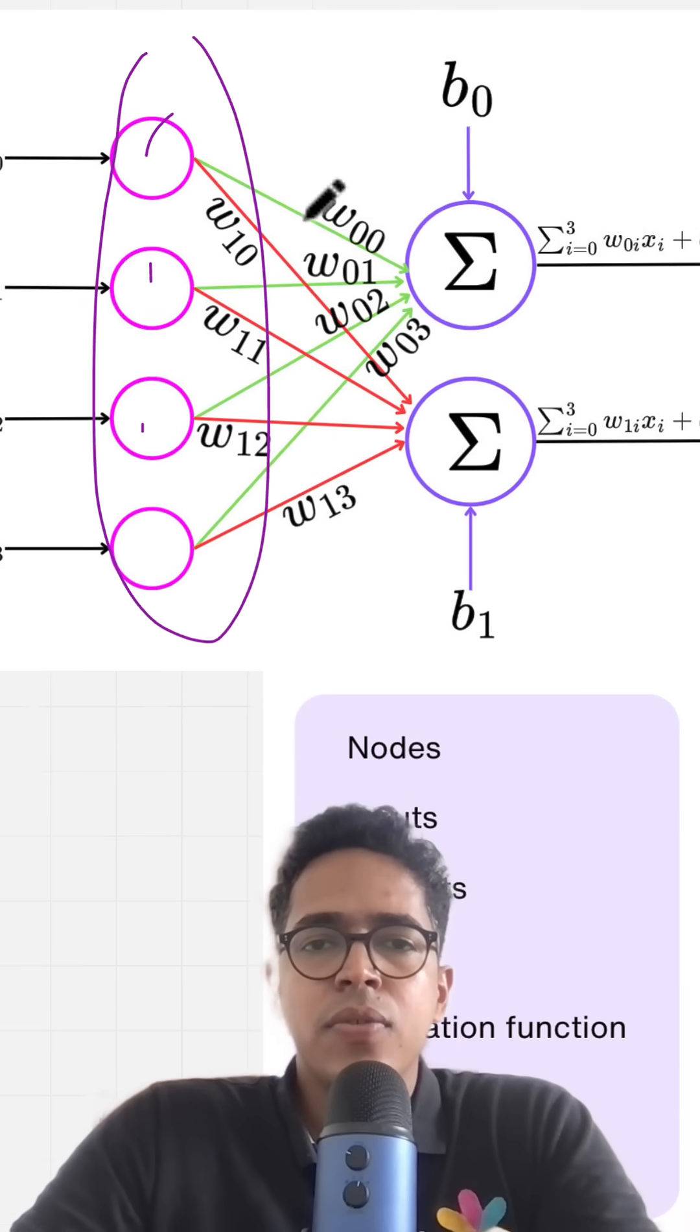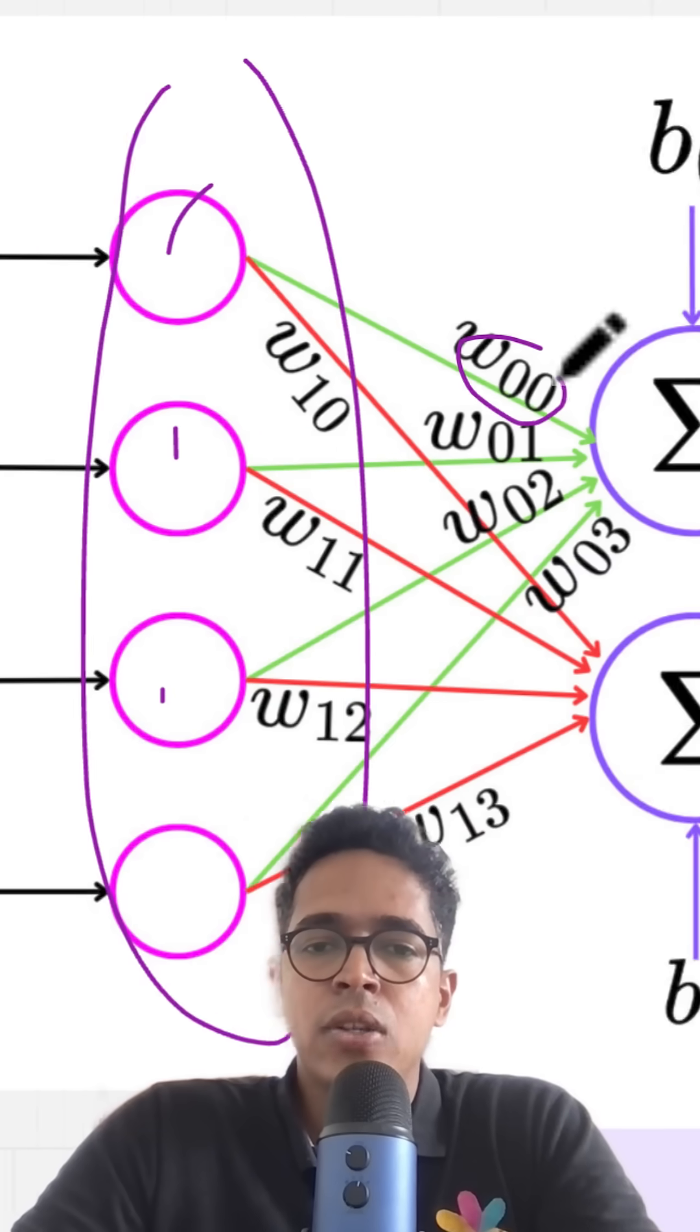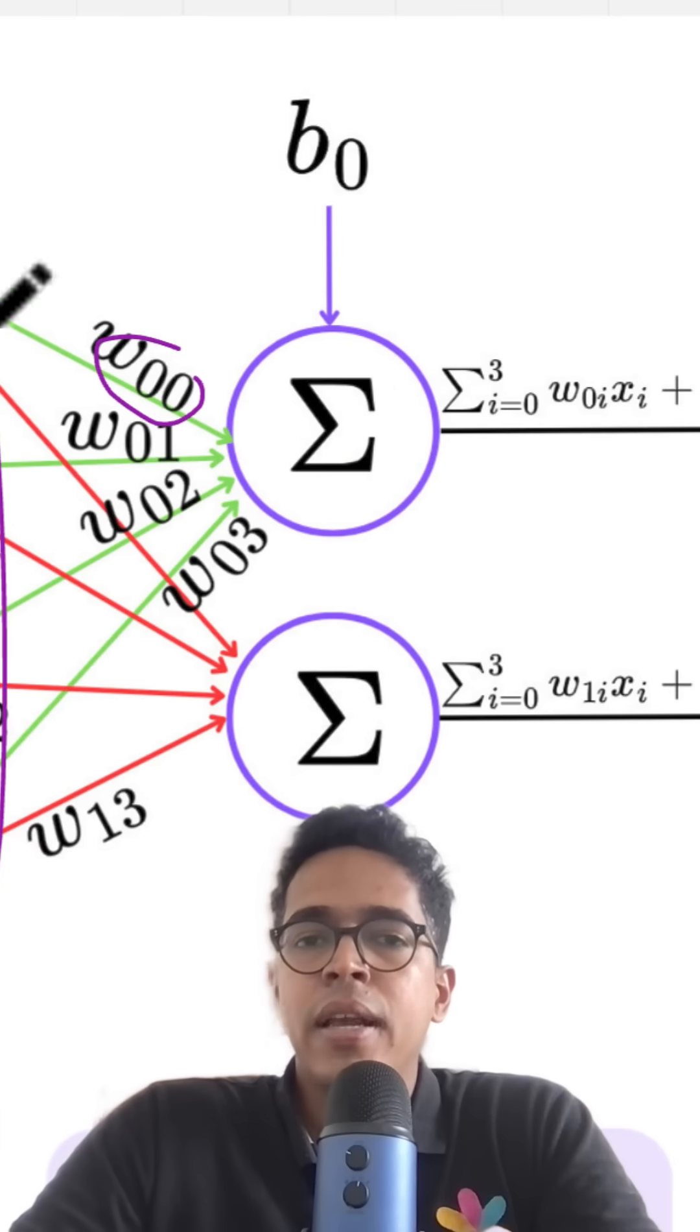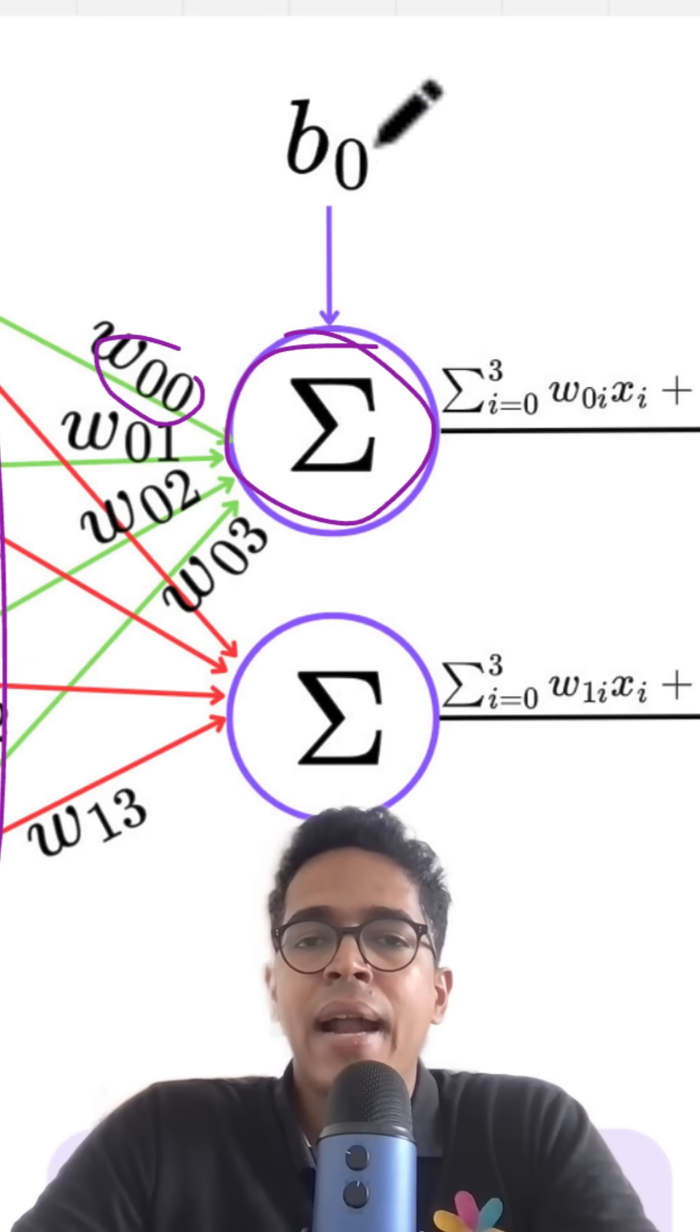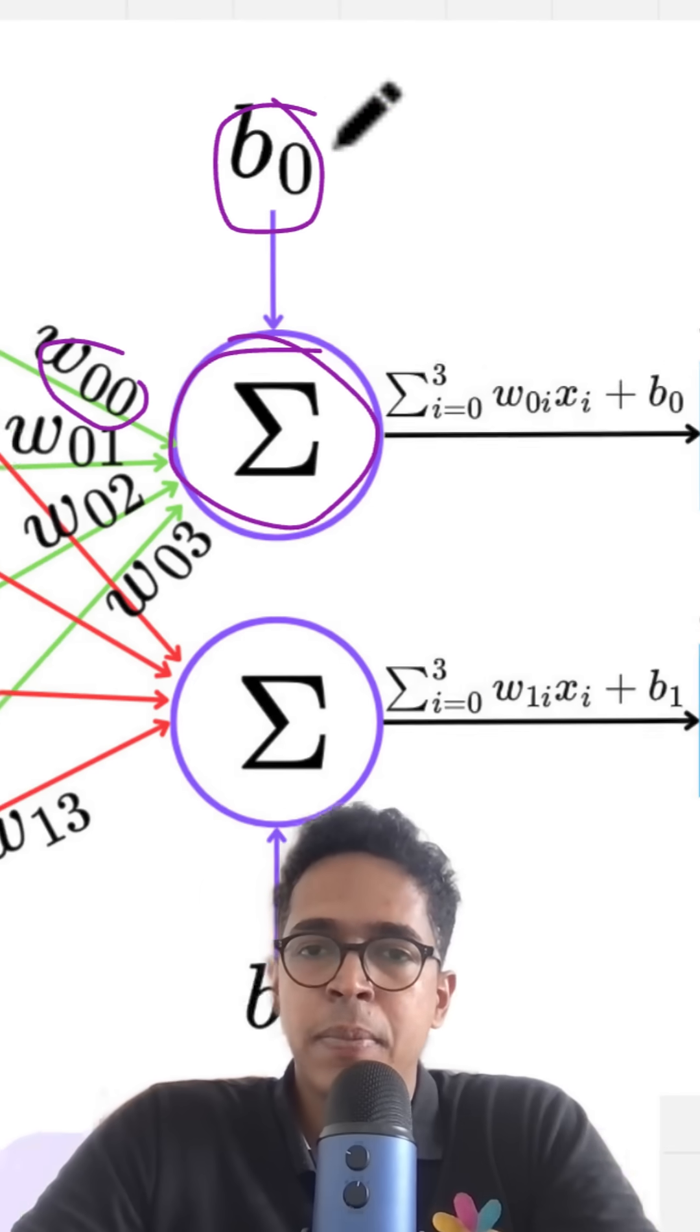The strength of these connections is determined by parameters called weights. And after performing a summation of the inputs using the weights, these nodes are added with an additional parameter called bias.